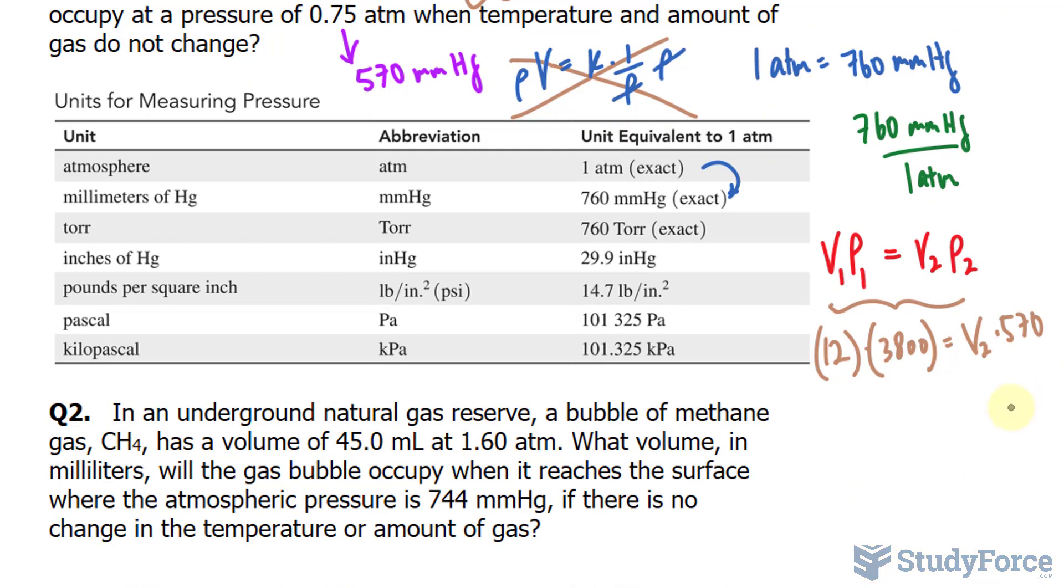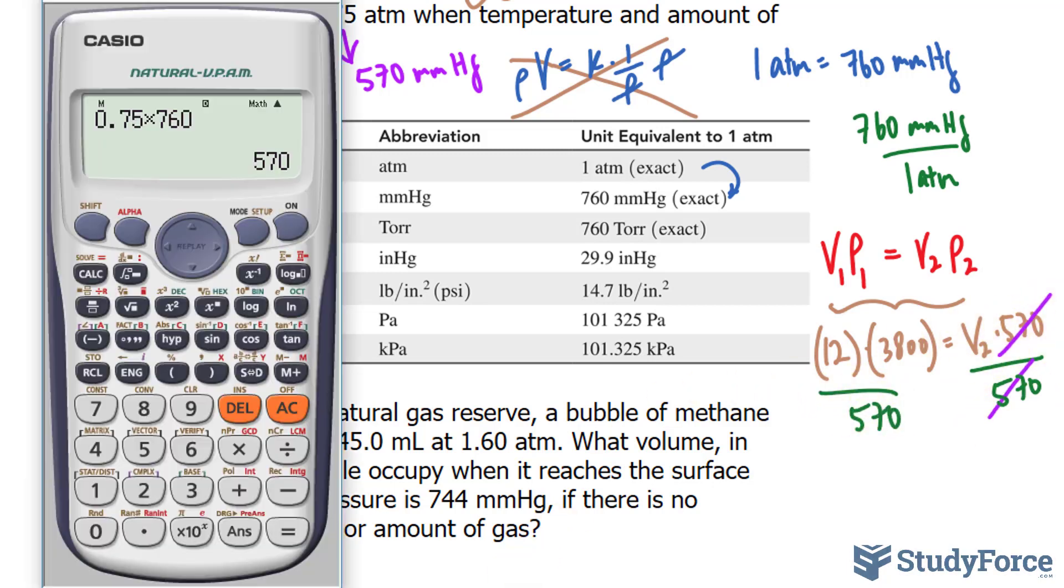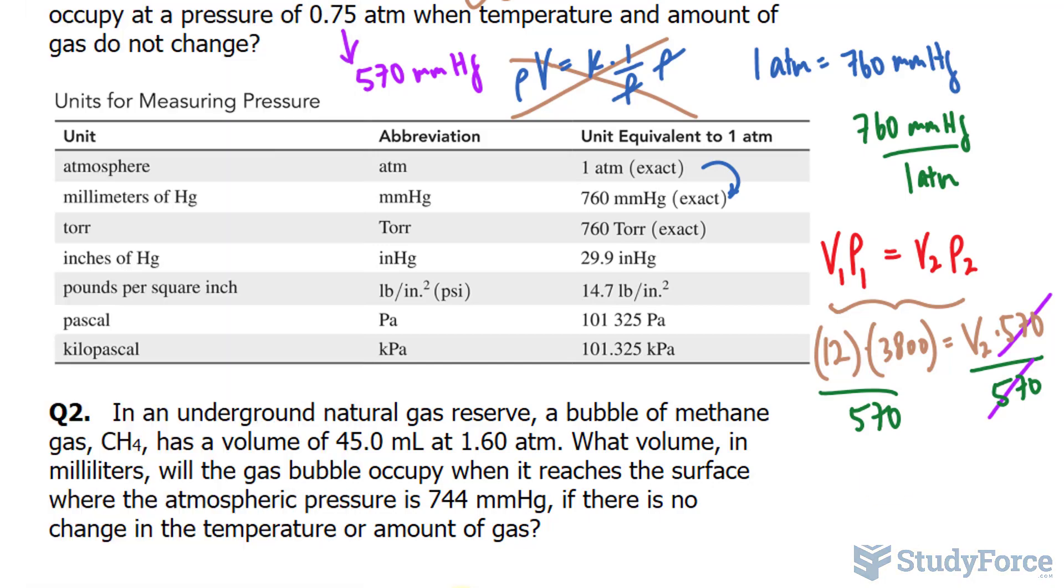If I divide both sides of this equation, the equation in brown, by 570, watch what happens. This number and this number will cancel out, leaving us with V2. So I'll take 12 times 3,800, make sure you click equals, and then we divide it by 570, and we get our brand new volume of 80 liters.